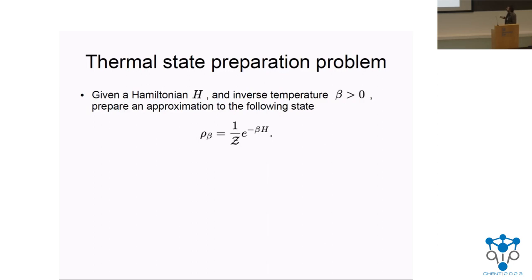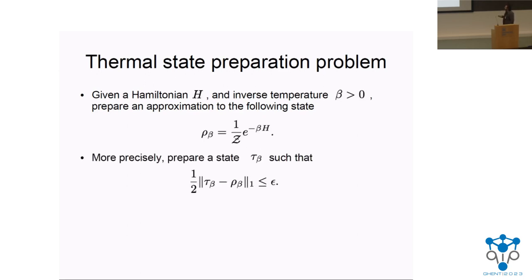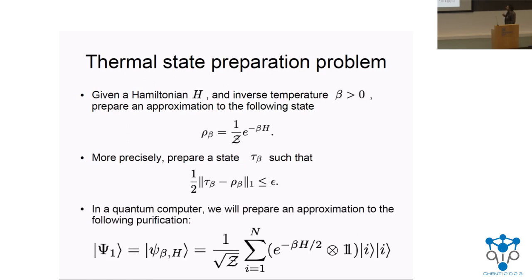To state the problem: we are given a Hamiltonian H and an inverse temperature beta, and we want to prepare an approximation to this thermal state. But since we are operating with a quantum computer, we actually want to prepare an approximation to a particular purification of that state. If you trace out the second party you can easily see that we end up with the thermal state.